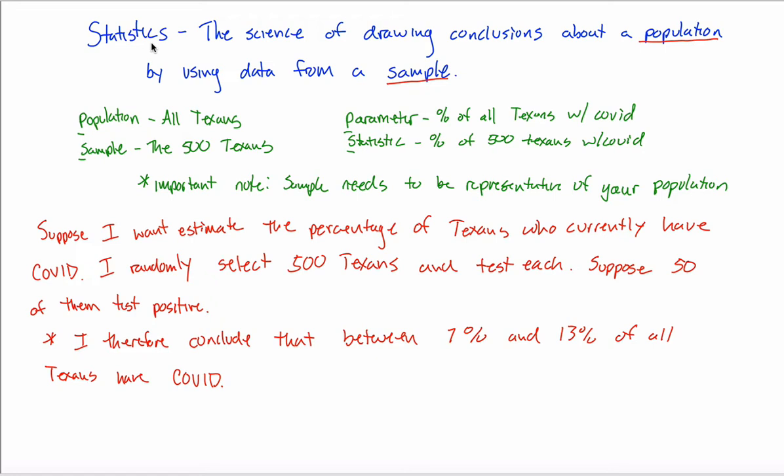So what we learned in the previous video is that if you have a question that's about a group that's too large to measure directly, then you will be using this process called statistics. And the basic process is you're going to find a group that's smaller, small enough to measure directly, and you will measure that group, calculate things that we call statistics, and use those to estimate things that we call parameters.